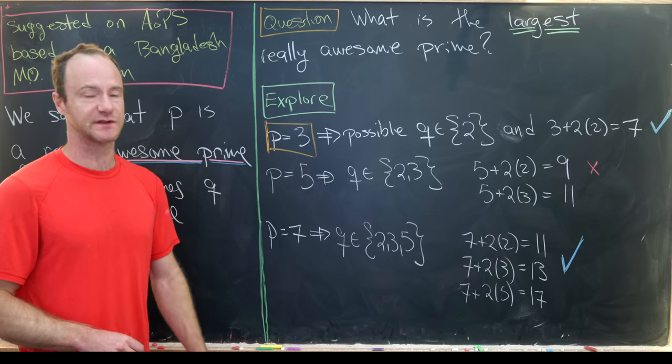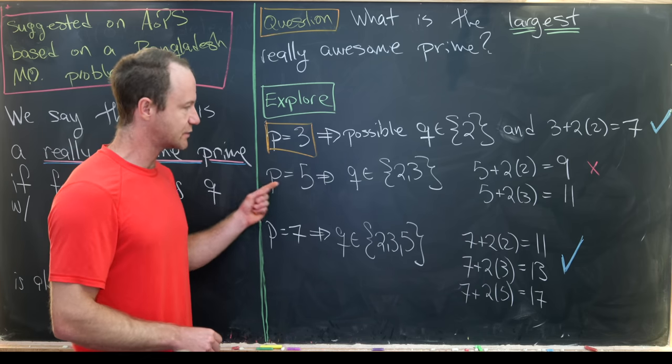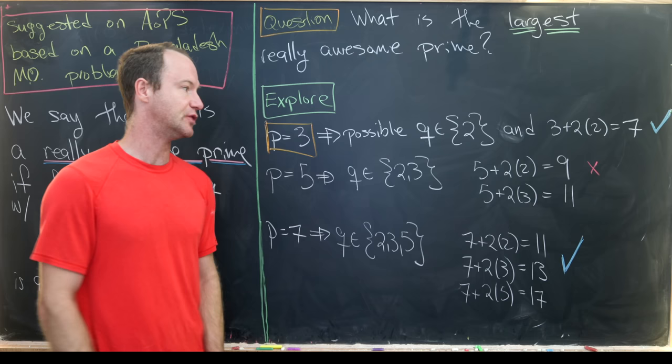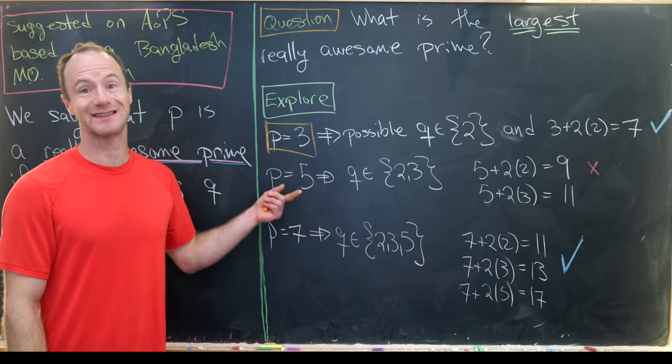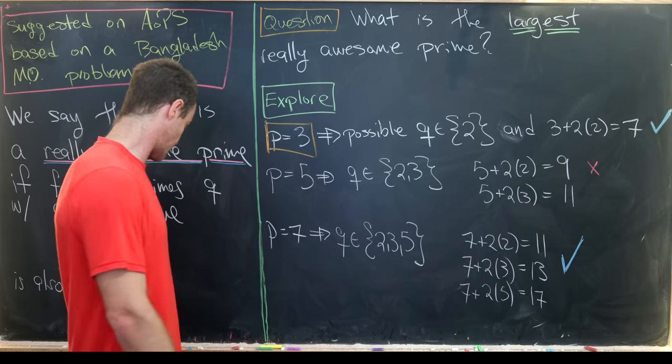Now let's look at if p equals 5. So if p is equal to 5, the smaller primes are 2 and 3. We can calculate 5 plus 2 times 2, that's 9, which is not prime.